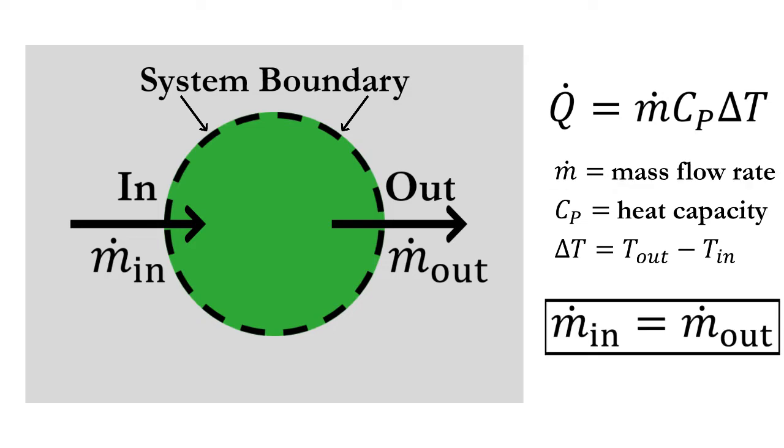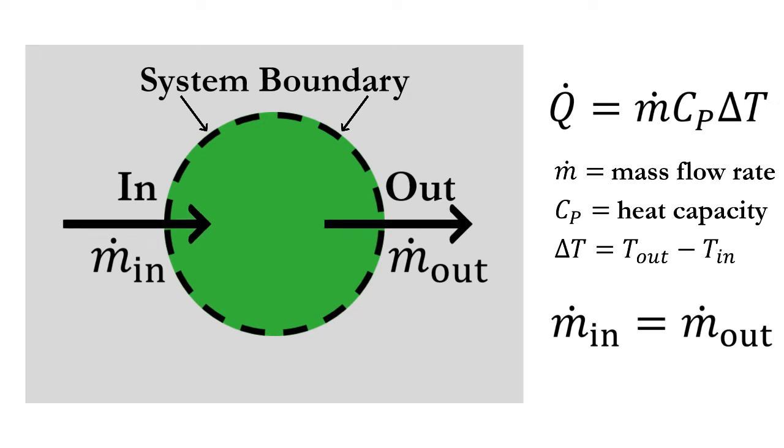When analyzing our heat exchanger, we also assume a steady state process, where the mass coming in is equal to the mass exiting. To prevent accumulation of fluid in our system, we must choose a boundary that contains an inlet and an outlet.